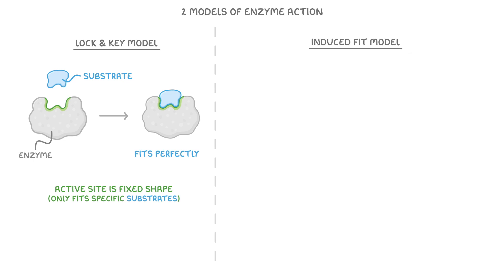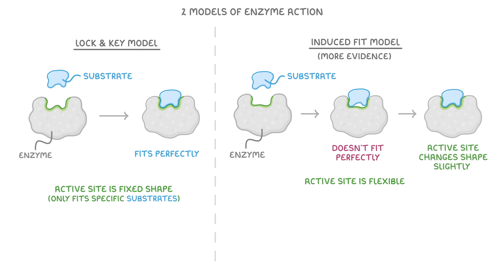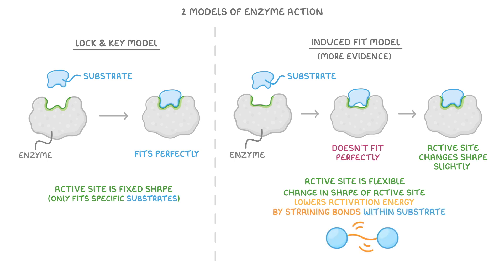The induced fit model offers a different perspective, and scientists have more evidence for this model than they do for the lock and key one. Looking at the enzyme and substrate this time, we can see that the substrate doesn't fit perfectly at first, but that the active site is actually flexible. When the substrate binds, the active site changes its shape slightly so that it better fits the substrate. This change in the shape of the active site lowers the activation energy, and it does this by straining the bonds within the substrate, making the reaction happen more easily than it otherwise would.